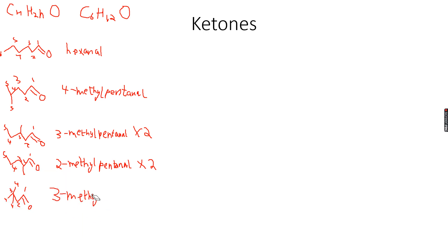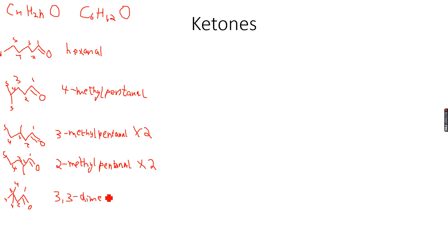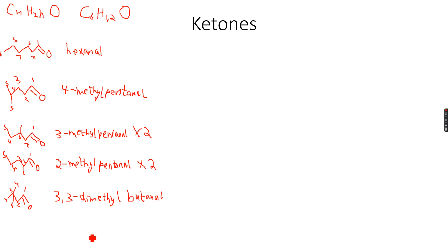So this becomes 3,3-dimethylbutanal — because you can see there are two methyl groups on the third carbon atom: 3,3-dimethylbutanal. Does this have any stereoisomers? No, because there is no chiral center and no carbon-carbon double bonds.